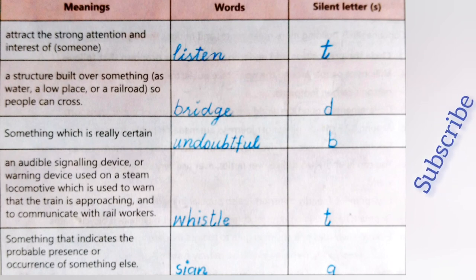Next: a structure built over something such as water, a low place or a real road so people can cross — that is 'bridge'. Here D is silent: B-R-I-D-G-E, bridge. Something which is really certain — that is 'undoubtful'. Here the B sound is silent while pronouncing this word, but it is present in writing.